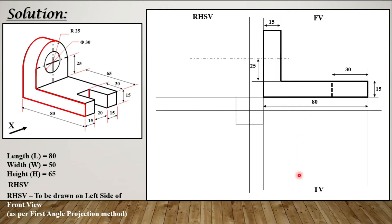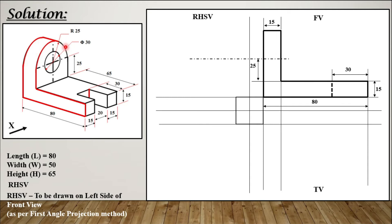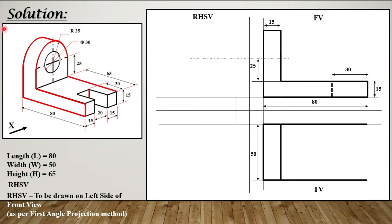Moving to the top view: taking projectors from the front view downwards, the length of 80 mm is carried as is. The other dimension visible in the top view is the width, which is 50 mm total. The semi-circular portion, when seen from the top, will appear as a rectangle. This 50 mm width gives the back edge. The front edge also appears as a flat line.